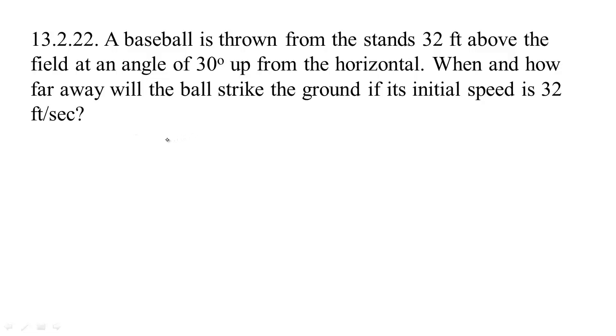Now this example is number 22 in the book. It says a baseball is thrown from the stands 32 feet above the field at an angle of 30 degrees up from the horizontal. When and how far away will the ball strike the ground if its initial speed is 32 feet per second?